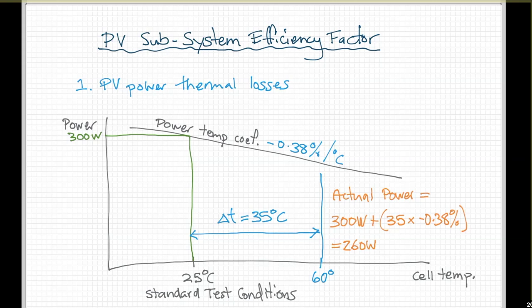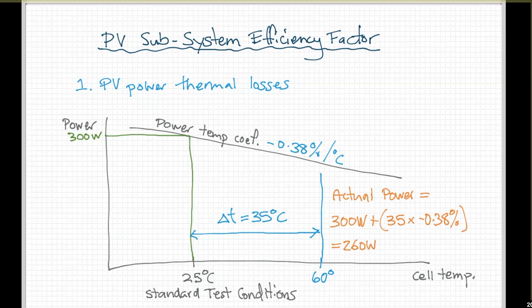In very cold climates, the effect reverses. A cell will typically be about 25–35°C warmer than ambient in full sun. If ambient is minus 5°C or colder, you could actually get more than the rated wattage out of your panels. So if you live in a really cold place, there is a little boost to performance.